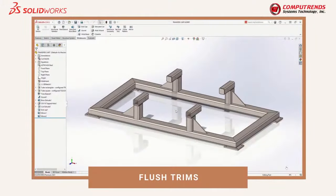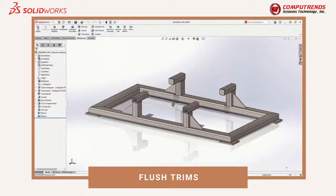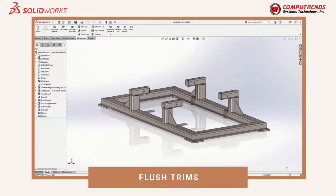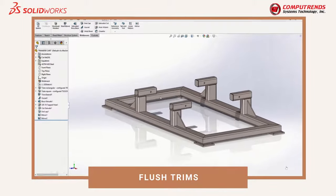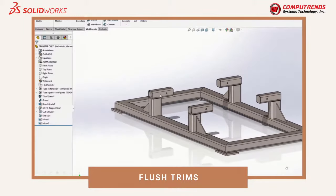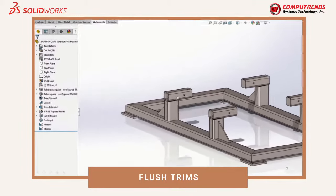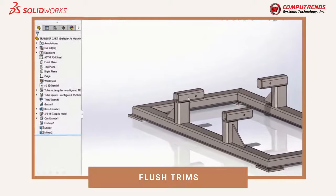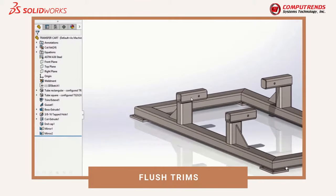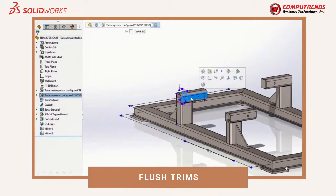When working in a weldment environment, it is common to use different sizes of weldment members. The horizontal pipes in this weldment frame are 2 by 2 square tubes and the vertical pipes are 3 by 2 rectangular tube.